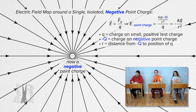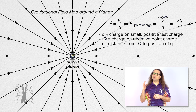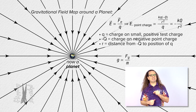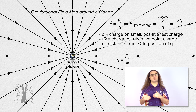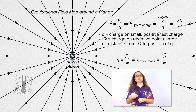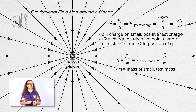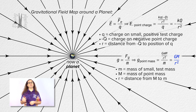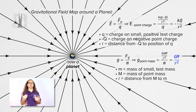That looks a lot like the gravitational field which exists around a planet, right? Yes, that is correct. Remember that the gravitational field equals the force of gravity divided by the mass of a small test mass. We can substitute Newton's universal law of gravitation in for the force of gravity, using lowercase m for the mass of the small test mass and uppercase M for the mass of the point mass, and we get that the gravitational field around a point mass equals the gravitational constant times the mass of the point mass divided by the square of r — the distance from the center of the point mass to the location of the small test mass or the location of the gravitational field.